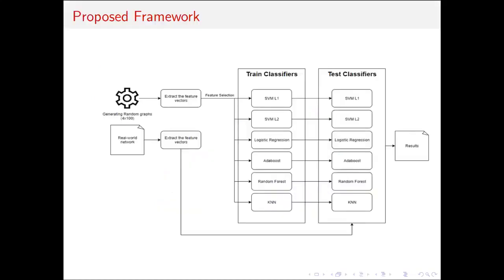The proposed framework uses two datasets: synthetic graphs produced by random graph models and real-world networks. To train classifiers, we extract features from synthetic graphs. After a feature selection step, we pass these vectors to six different learning algorithms.